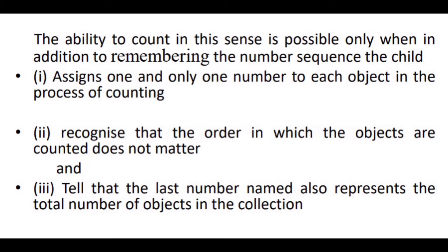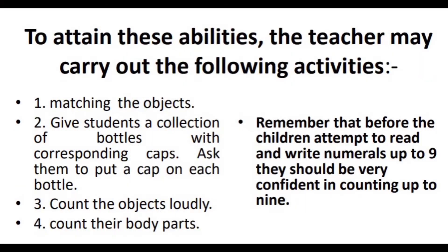In the process of helping children recognize numbers zero to nine, the idea that adding one more to a number gives the next number must be clearly understood. To achieve these learning outcomes, a variety of strategies and activities are employed. Suggested activities include matching objects, and another activity where students are given a collection of bottles with corresponding caps.